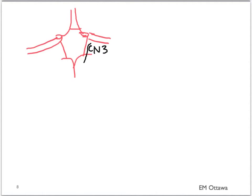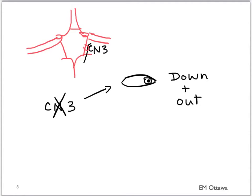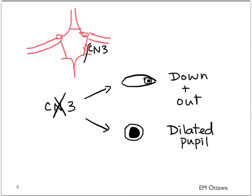An expanding aneurysm can also cause symptoms before it ruptures. Cranial nerve 3 runs very close to the posterior communicating artery, so an aneurysm there will compress cranial nerve 3, leading to the eye being down and out, and lack of pupil constriction — the pupil therefore stays dilated. Whenever we see a cranial nerve 3 deficit that involves the pupil, we have to worry about a posterior communicating artery aneurysm compressing the nerve.